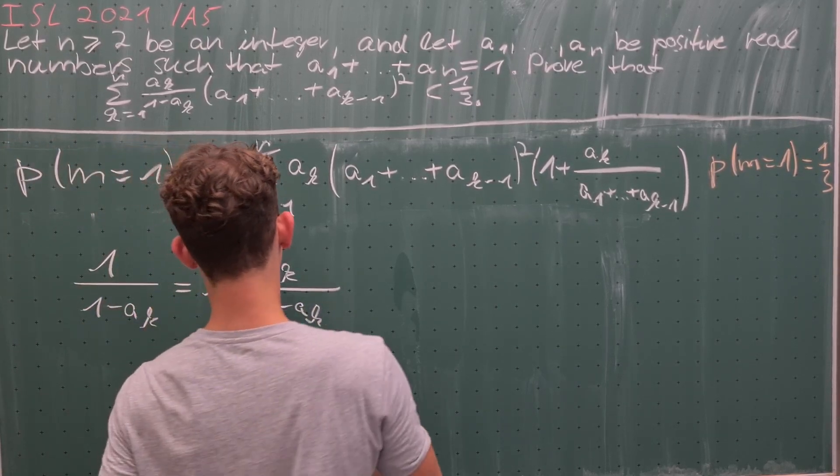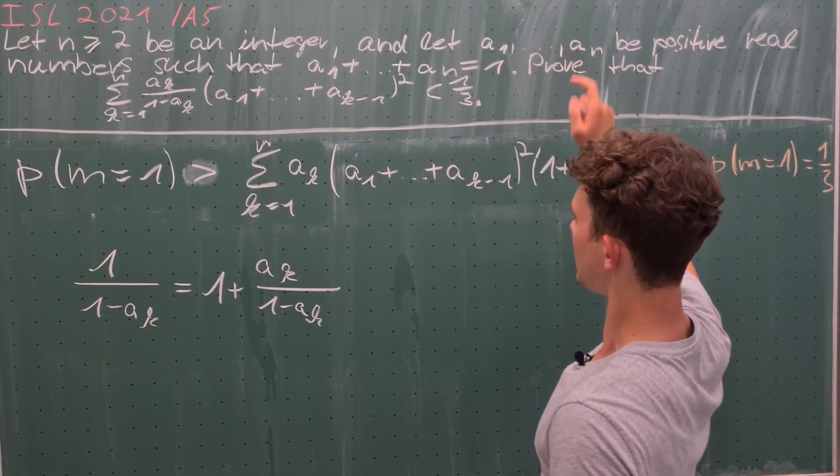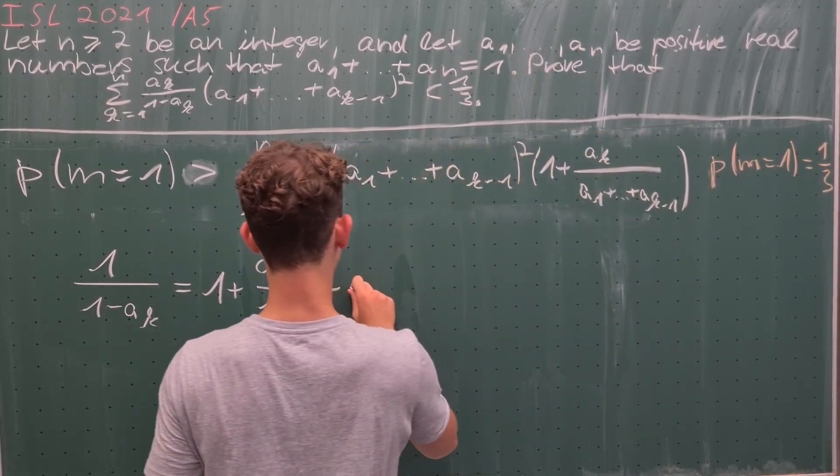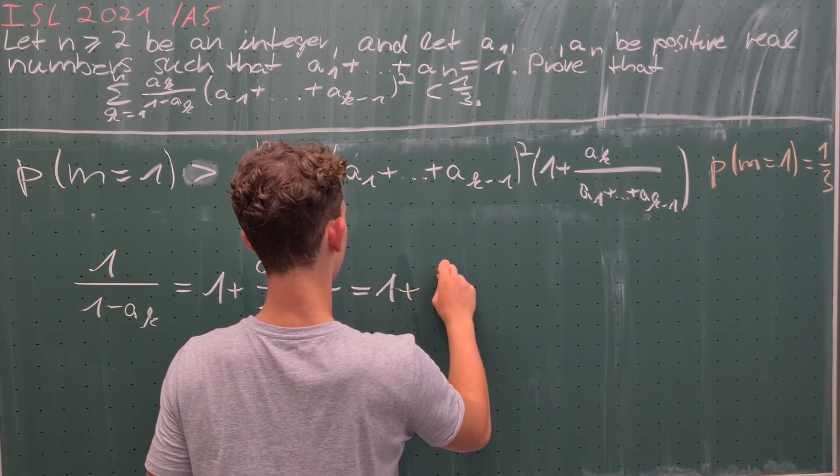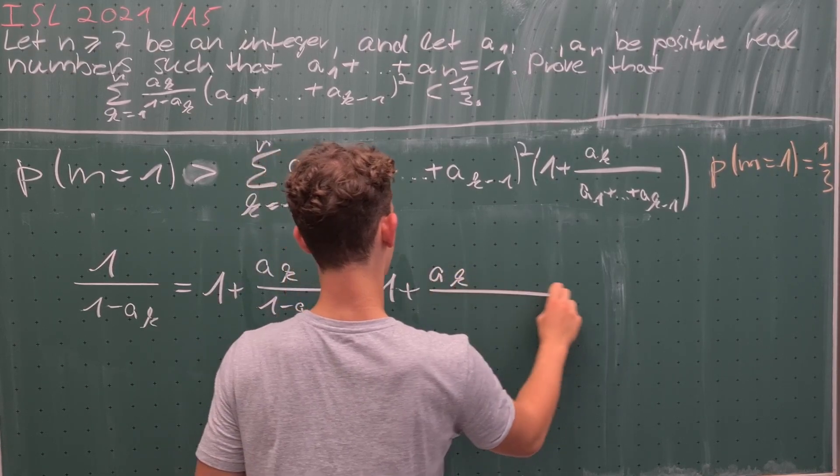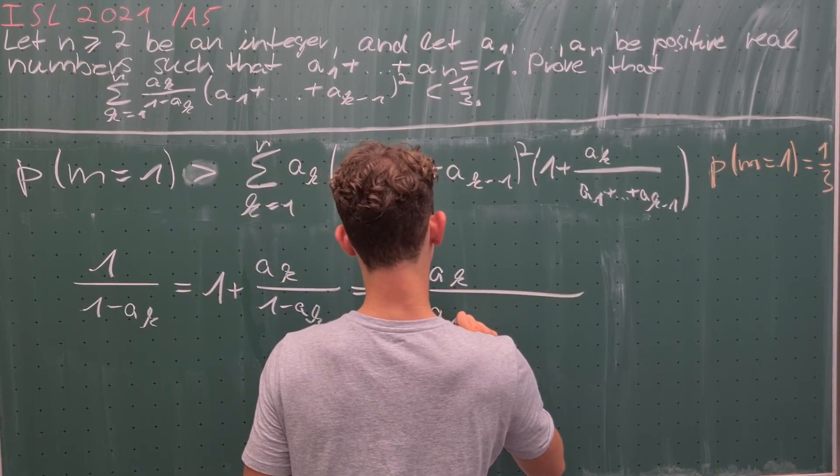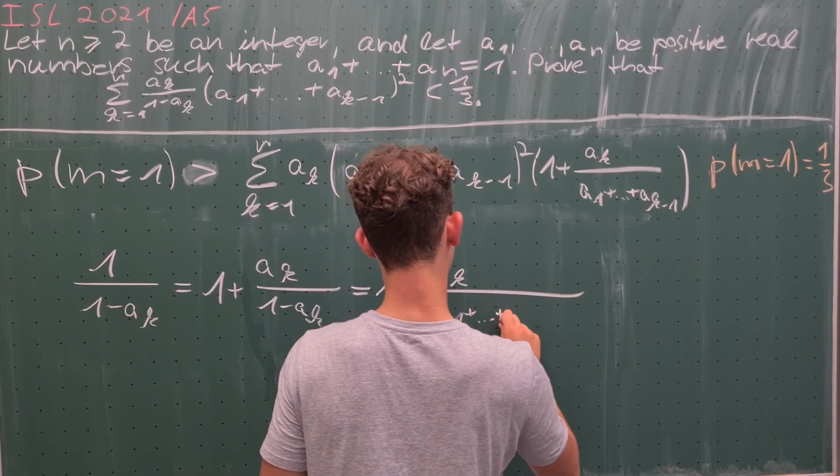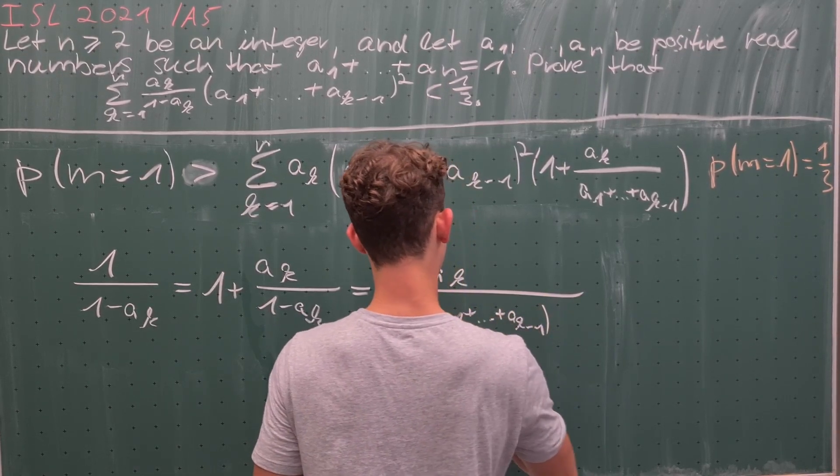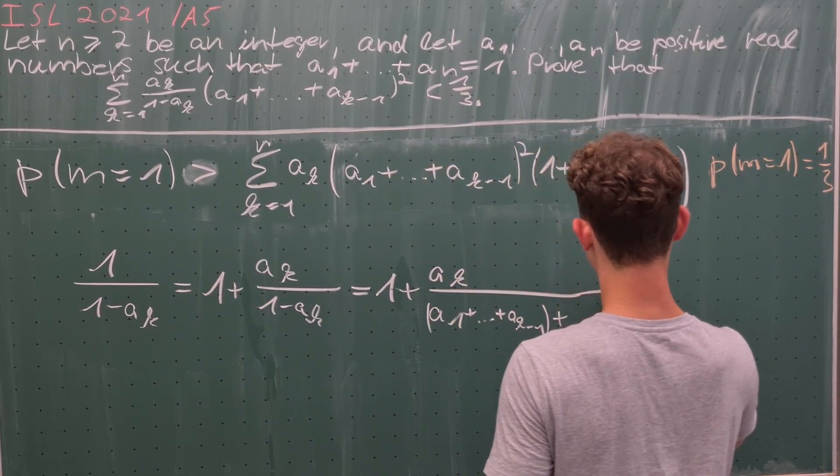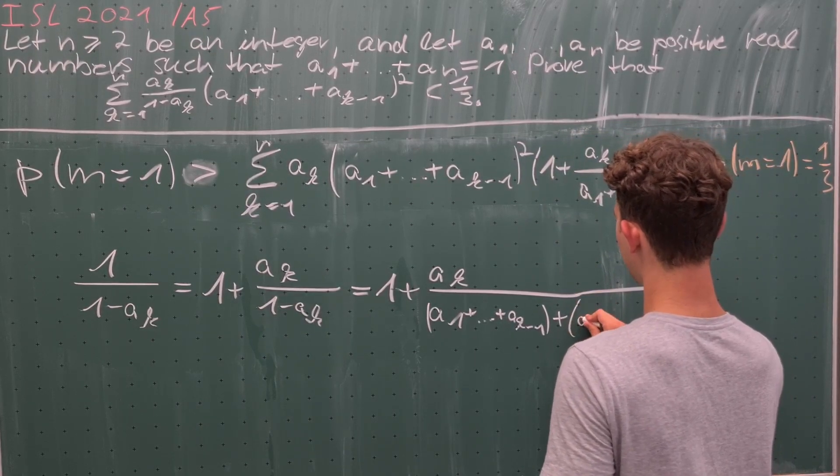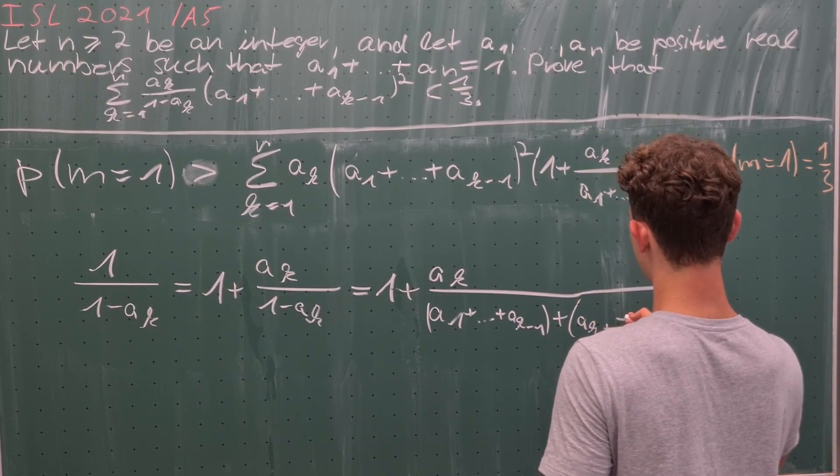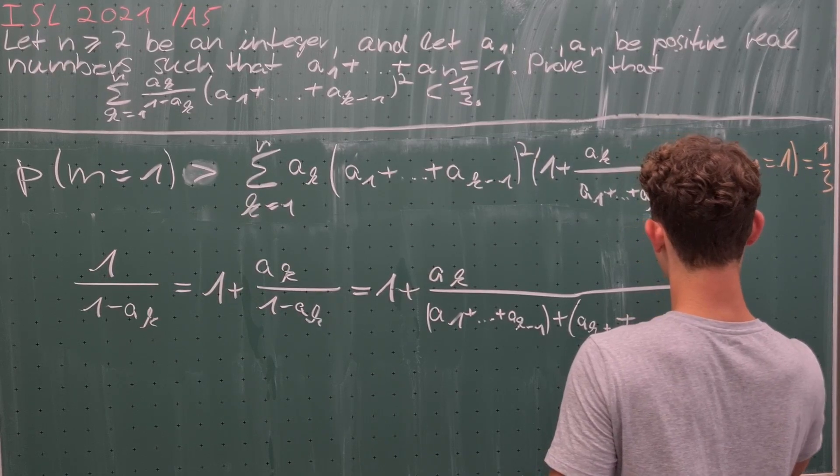And (1 minus a_k) is just the sum of all of these numbers without a_k. So therefore this is equal to 1 plus a_k over (a_1 plus a_{k minus 1} plus a_{k plus 1} and so on up to a_n).